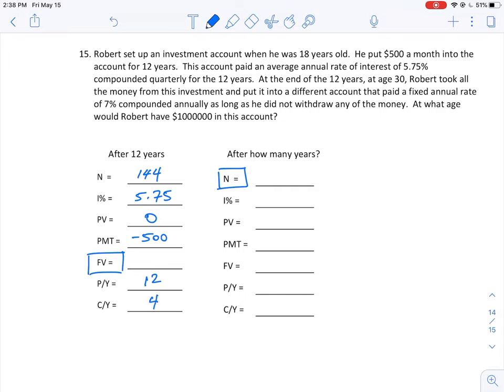If we work this out using the TVM solver, you should get a future value of $103,163.01. We round that to the nearest dollar.